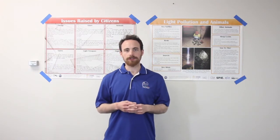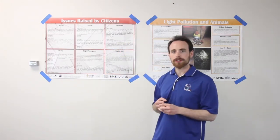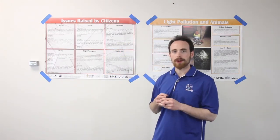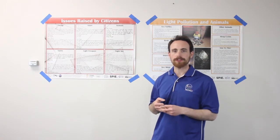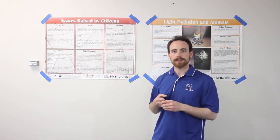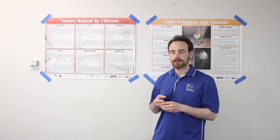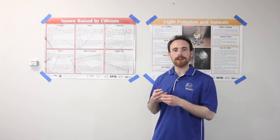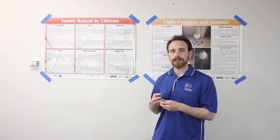In order to get students thinking about the types of issues that light pollution can cause for animals, first call their attention to the issues poster. This poster presents a number of problems in the form of letters written to the city's mayor. The mayor will be acted by the teacher while the students will serve as members of a task force assigned to find potential solutions to these problems.